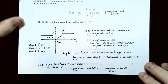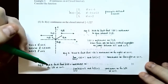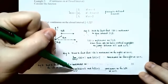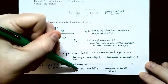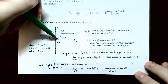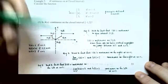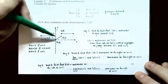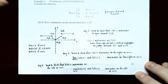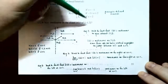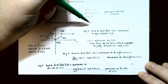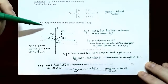Step 2: Check continuity on the right at x equals −1. The limit as x approaches −1 from the right is 1, since |−1| = 1. The function's value h(−1) = |−1| = 1. Since these are equal, the function is continuous on the right side of x equals −1.